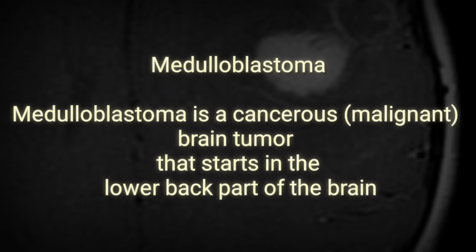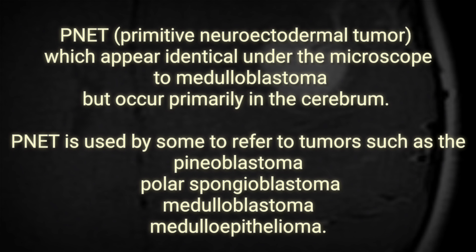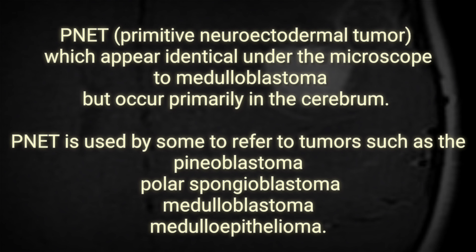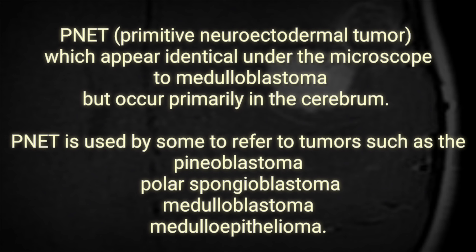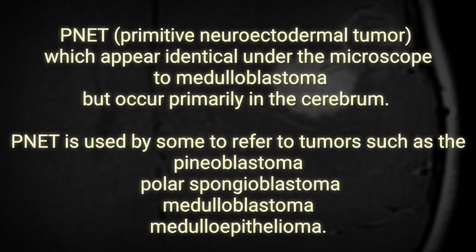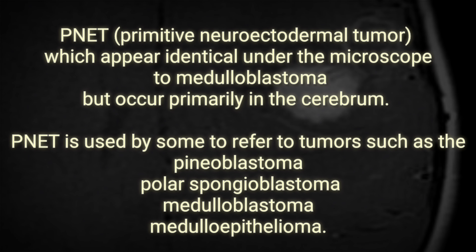One example of tumors of the medulla oblongata is medulloblastoma. This is a primitive neuroectodermal tumor accounting for about 20% of pediatric brain neoplasms. Other than disrupting the integrity of the tracts and nuclei present, this is a highly metastatic tumor that fortunately responds well to radiotherapy. A chief concern with these masses is the likelihood of obstructing the foramina of the fourth ventricle, resulting in hydrocephalus — increased water in the brain — and consequently increased intracranial pressure.